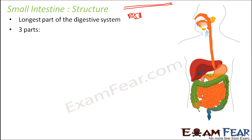You might ask an interesting question: if it is the longest part, then why is it called small intestine? Is that a misnomer? No, it is not a misnomer. It is called small intestine because the width of the tube is very less — it is a very narrow tube. The thickness is very small, and that is why it is called small intestine.